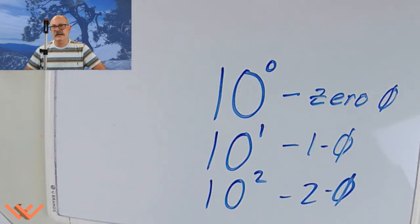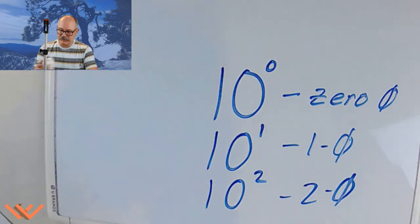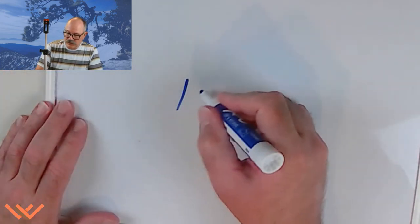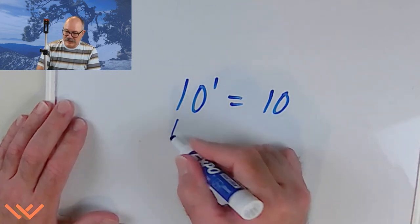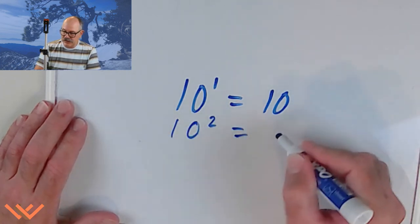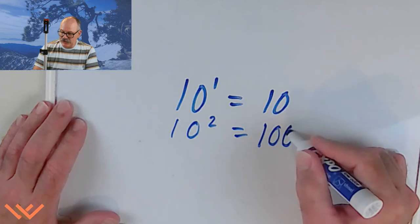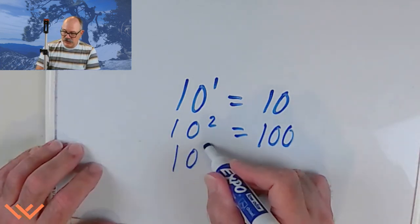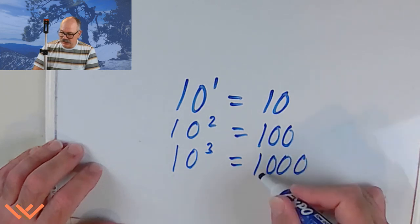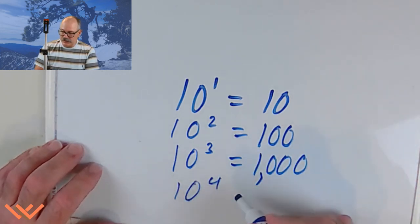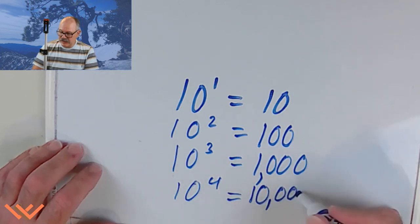But wait, how does that look like when we expand that out? So 10 to the power of 1 is equal to 10. So we have just 1, 0. 10 squared is equal to 100. And then I have two zeros there. 10 cubed is equal to 1,000. And 10 to the fourth, or the fourth power is equal to 10,000.